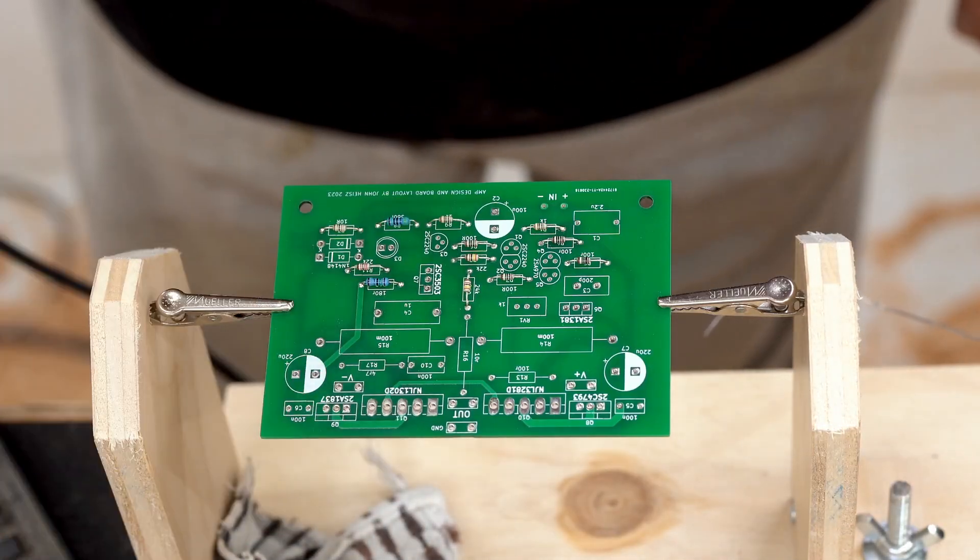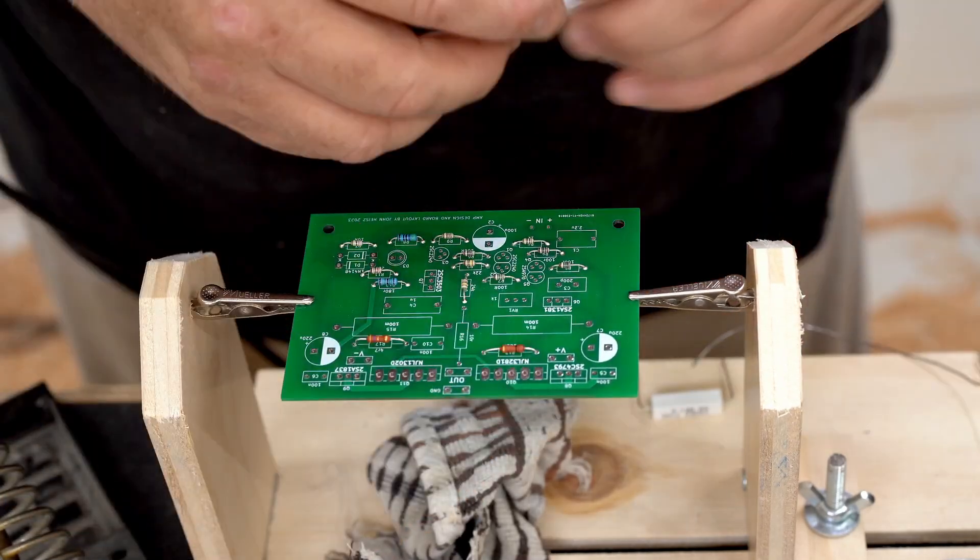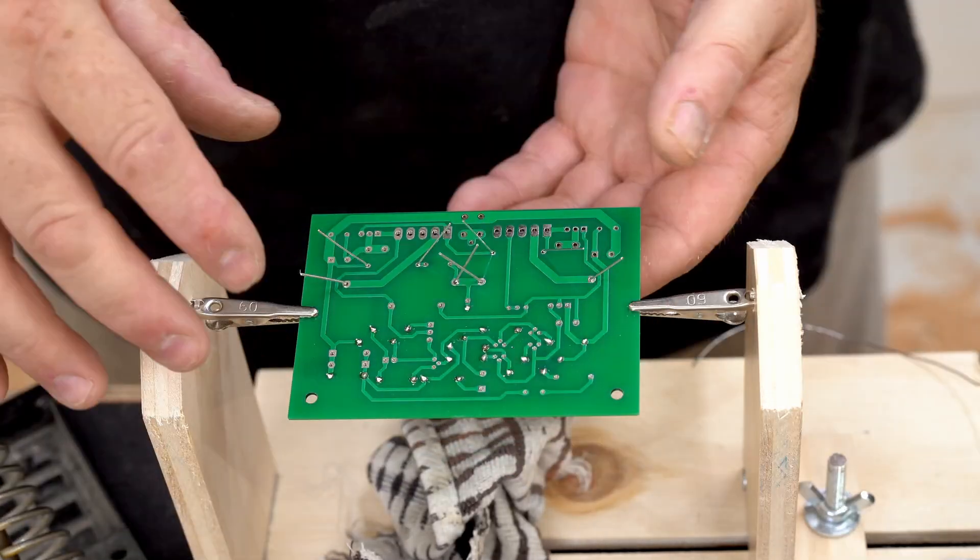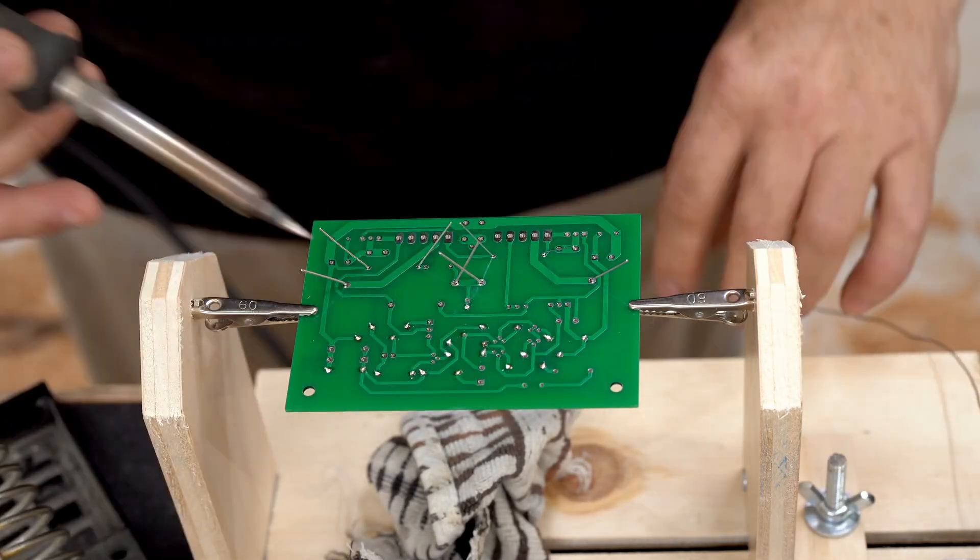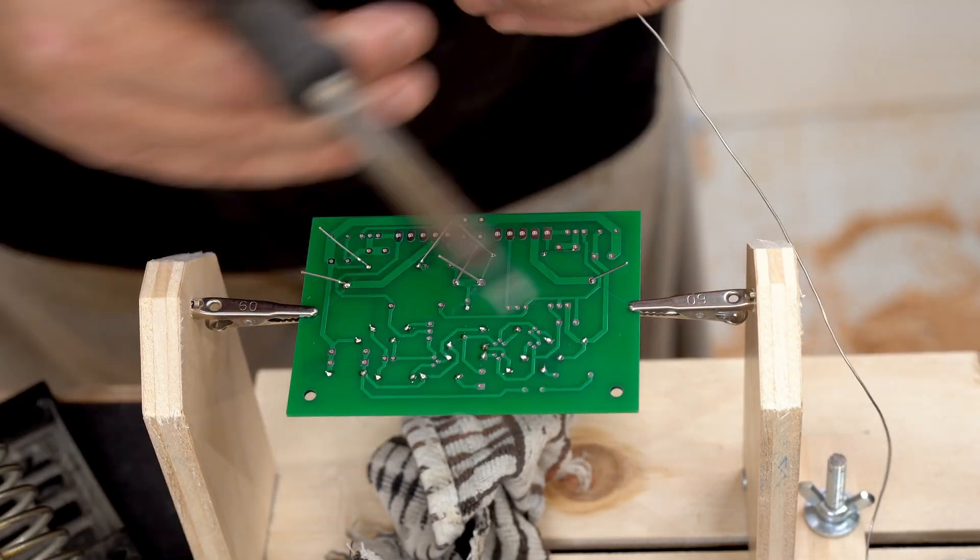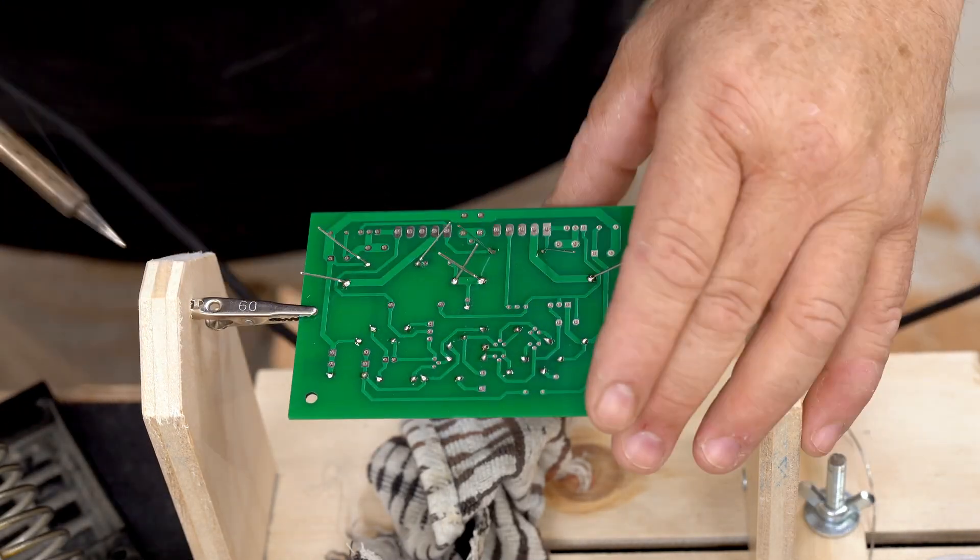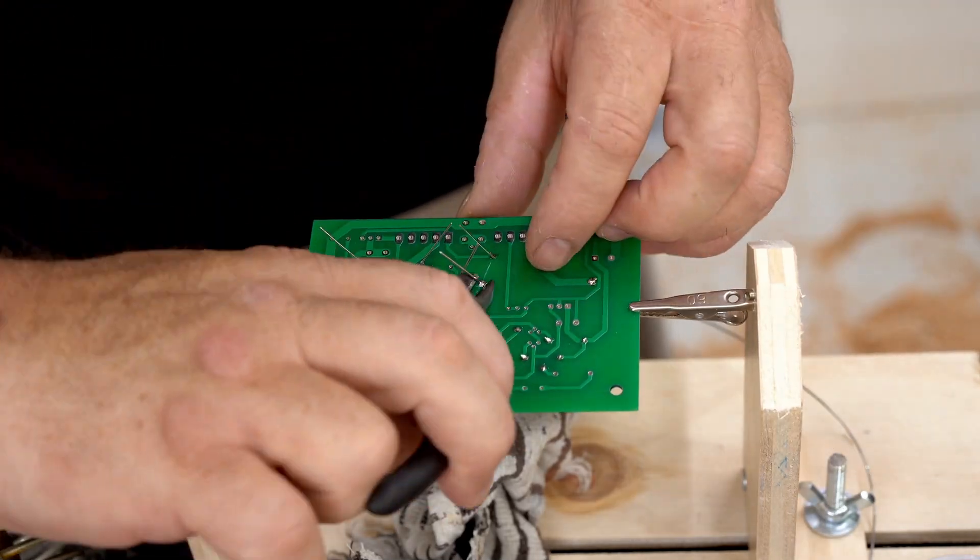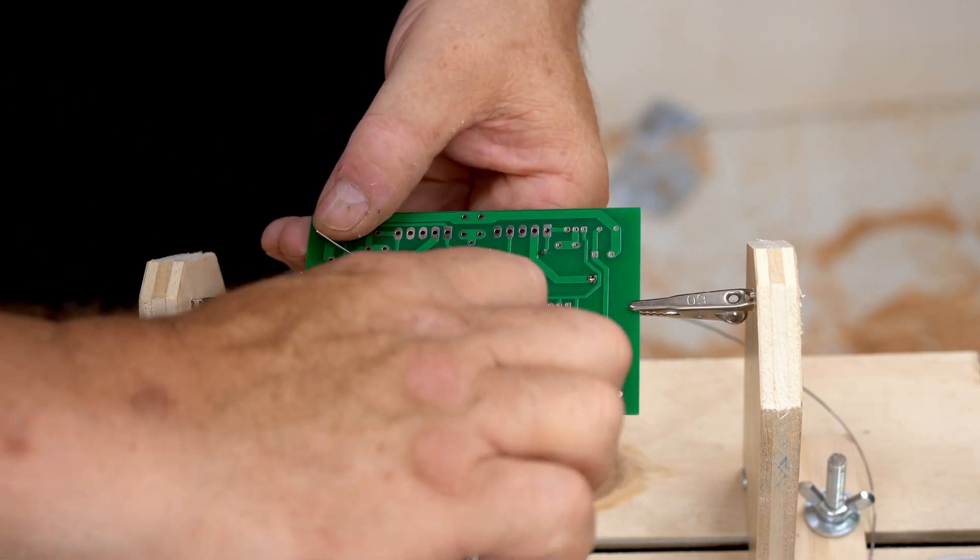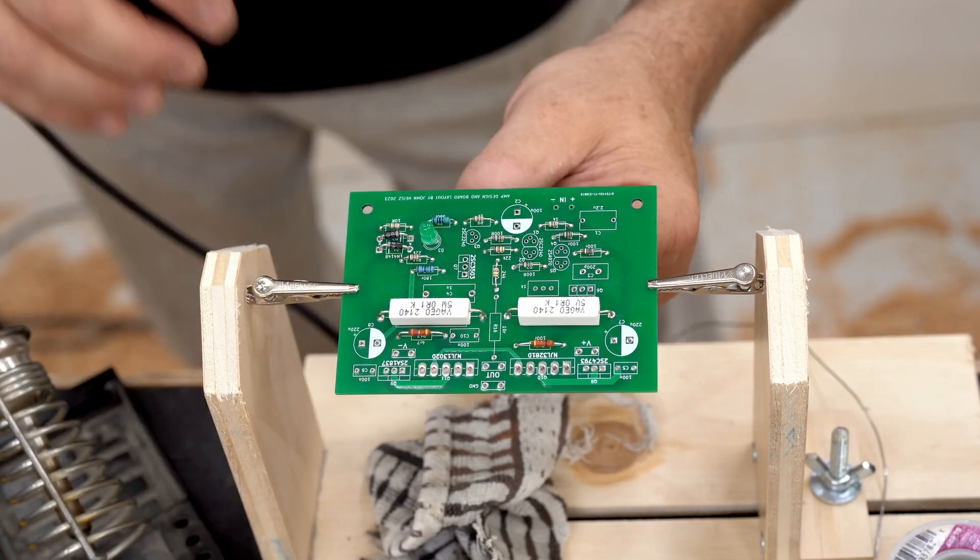The solder that I'm using here is the standard rosin core 60/40, nothing special about it. In fact, the roll that I have here I've had since the 90s. I put in so many components, solder them in place, and then snip off the leads so it doesn't get too crowded on the bottom with leads sticking out all over the place, and then you miss one while you're soldering it.